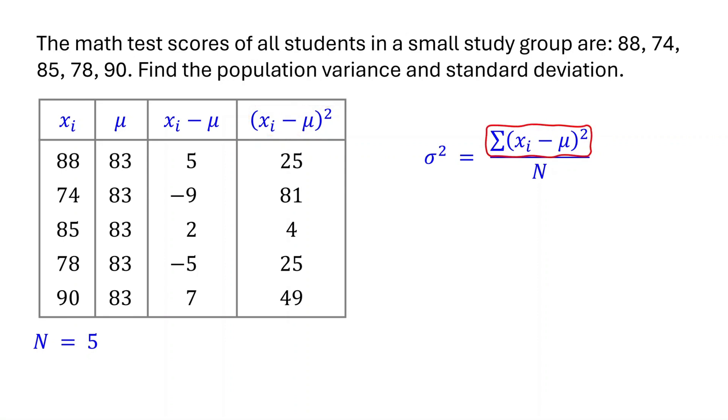Now, to get this sum in the numerator, you just need to add up all the squared differences. Adding these squared differences, we get 184. Since our population size is 5, we divide by 5. 184 divided by 5 is 36.8. Therefore, the population variance is 36.8.